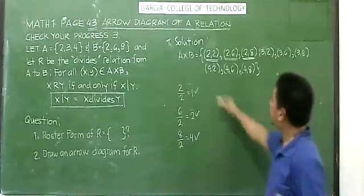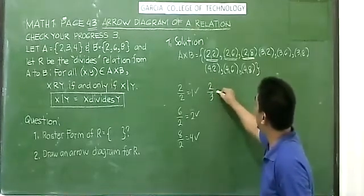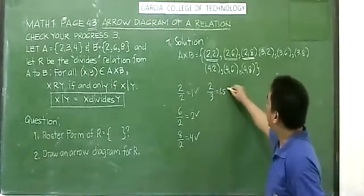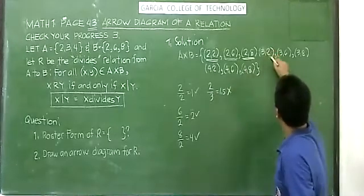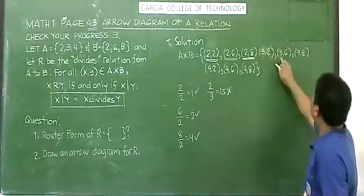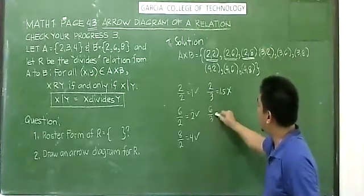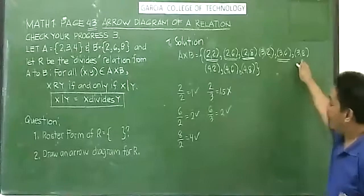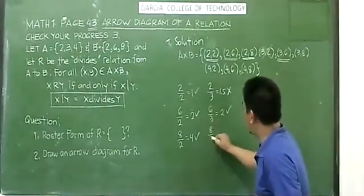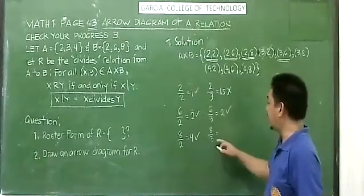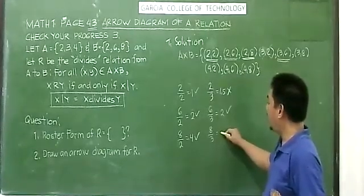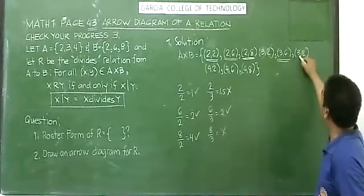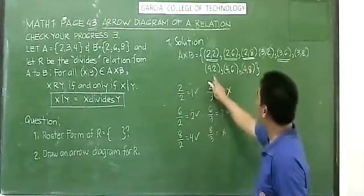Now for 3: (3,2) — 2 over 3 = 1.5. It is not a whole number, so it does not divide. (3,6) — 6 over 3 = 2. Yes, it divides, so (3,6) is included. (3,8) — 8 over 3 = 2.167. Not a whole number, so (3,8) is not included.